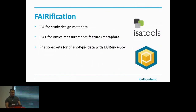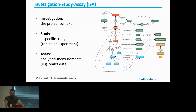For better interpreting the biological context of the omics datasets, we also need to verify the phenotypic information, which we capture using the phenopackets framework. The ISA framework data model — shown here — covers the investigation at the project context level, the study focusing on specific study design and experiments, and in our case the assay part covers the analytical processes at different omics levels.